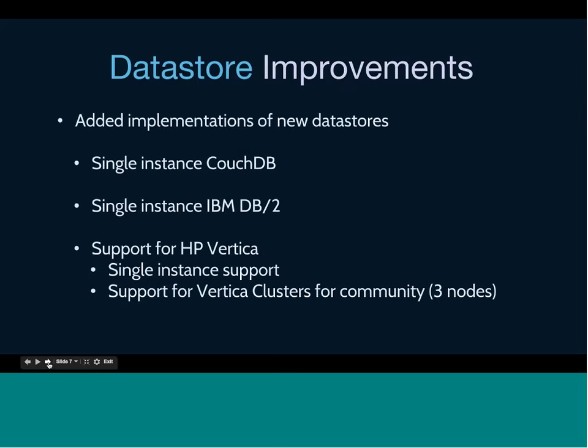We also did a lot of datastore improvements in Kilo. We added implementations for single-instance CouchDB and single-instance IBM DB2. We also added support for HP Vertica, both single-instance support and support for Vertica clusters for the community edition, which is up to three-node clusters. This is a trend we've been seeing in Trove since Juno and Icehouse — a lot more SQL and NoSQL databases want guest agents in Trove. People want to deploy not just MySQL, Mongo, and Redis, but also newer databases and traditional databases like DB2. We'll see this trend carry through to Liberty as well.